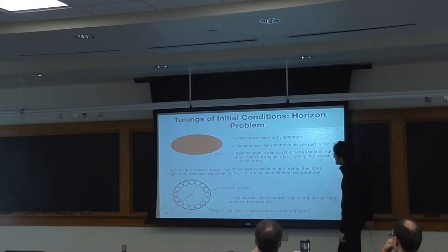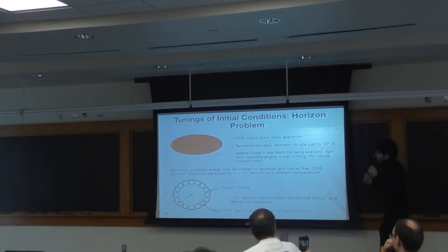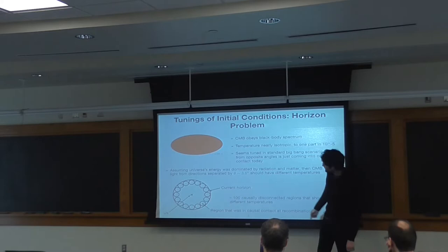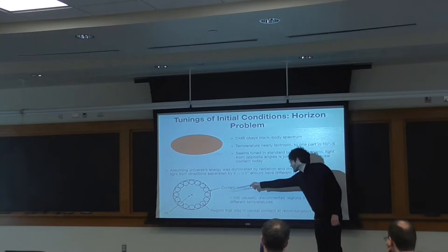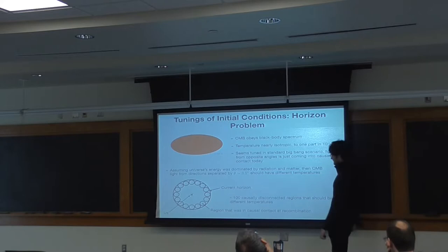The first one is known as the horizon problem. The cosmic microwave background obeys, to 1 part in 10 to the minus 5, a blackbody spectrum with an isotropic temperature of 2.7 Kelvin. This seems puzzling because when you look at opposite directions of the sky, light from those directions is just coming into causal contact today. In this cartoon, these bubbles represent the causal horizons at the time of recombination when the CMB was formed. If you do the calculation, there should be about a hundred such different horizons. If these horizons were really not in causal contact with each other, it seems strange that light coming from them all has approximately the same temperature.